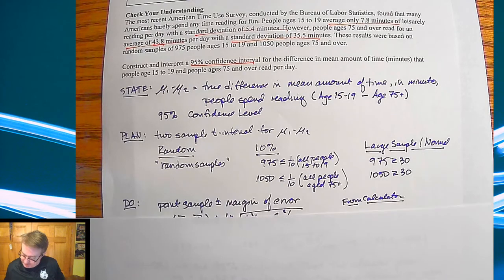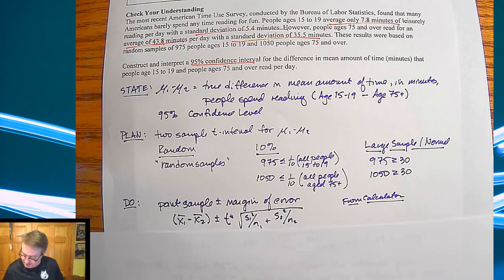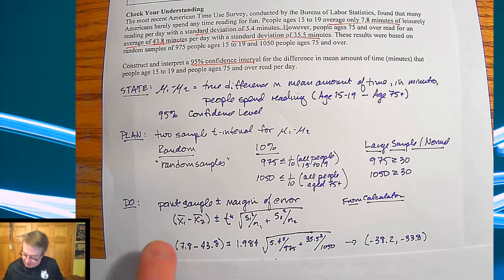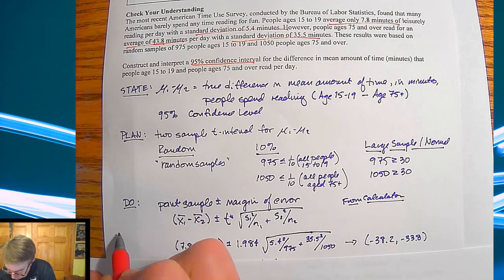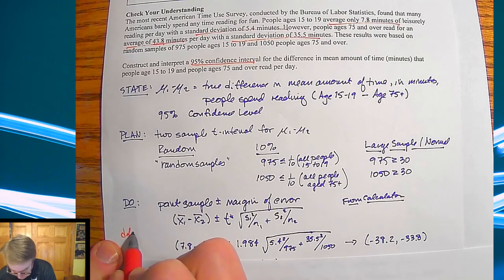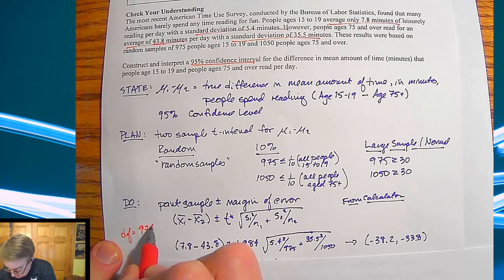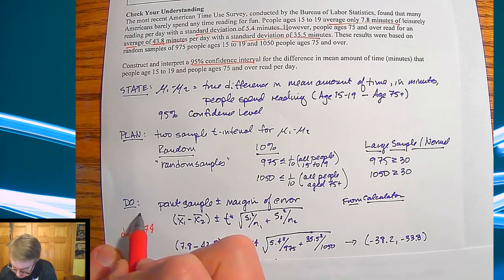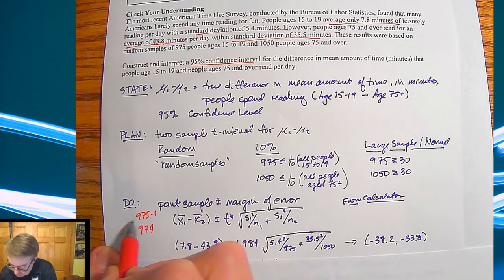For the Do: point estimate plus or minus margin of error. x̄1 - x̄2 plus or minus t* times the square root of the standard deviations. Plug everything in right here. We're using degrees of freedom of 974, because 975 was the smaller number.